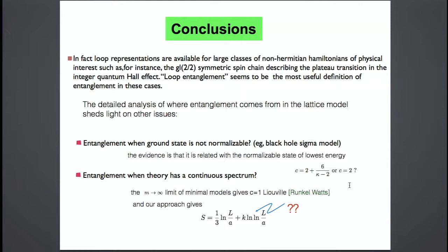Thank you, Hubert. There was a question: I think the log-log correction has been observed numerically, even out of equilibrium — after a quench, where you have a linear log T behavior, there is clearly a log T correction, by Mark Metzey. In a quench the effect is enhanced because you have exponential-in-L scales, so it's clearly the same story, even though it hasn't been observed in the Gaussian case or the harmonic chain.